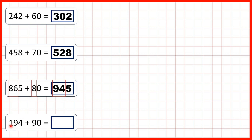Finally, we have 194 plus 90. 9 plus 9 is 18, so 19 plus 9 is 28. So we change our hundreds digit to a 2 and our tens digit to an 8. The ones digit stays the same, so we get 284.